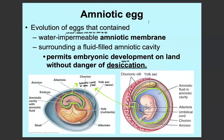If we look at the amniotic egg, eggs have evolved to contain a water-impermeable amniotic membrane, which means that water and amniotic fluid don't leave the egg. This membrane surrounds a fluid-filled amniotic cavity filled with amniotic fluid. This allows the embryo to develop on land without danger of desiccation. You can see highlighted in green the amniotic cavity filled with amniotic fluid, surrounded by an amniotic membrane, with a yolk sac that provides nutrients and a hard shell around it.